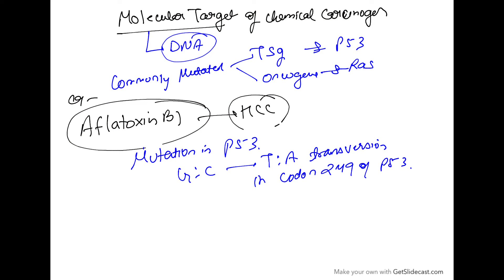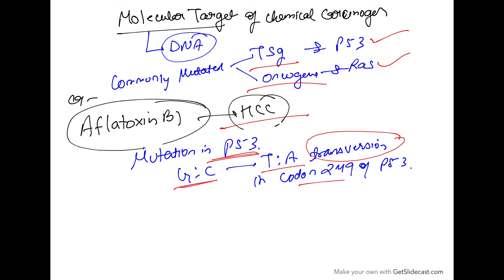Now, what is the molecular target of chemical carcinogens? DNA is the target. Commonly mutated tumor suppressor genes include P53, and the commonly mutated oncogene is the RAS oncogene. Aflatoxin B1 is a natural product involved in hepatocellular carcinoma. It causes a mutation in P53 — specifically a GC-to-TA transversion at codon 249 of P53.